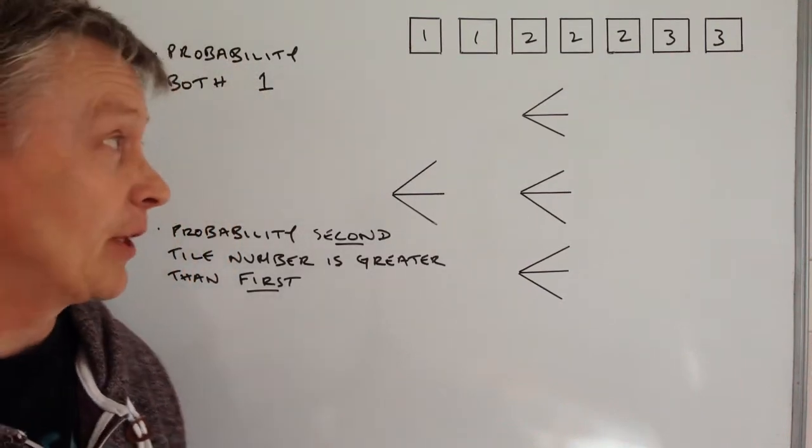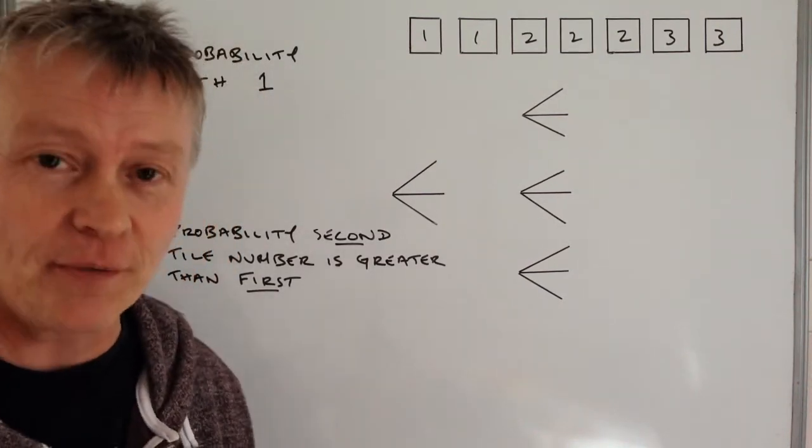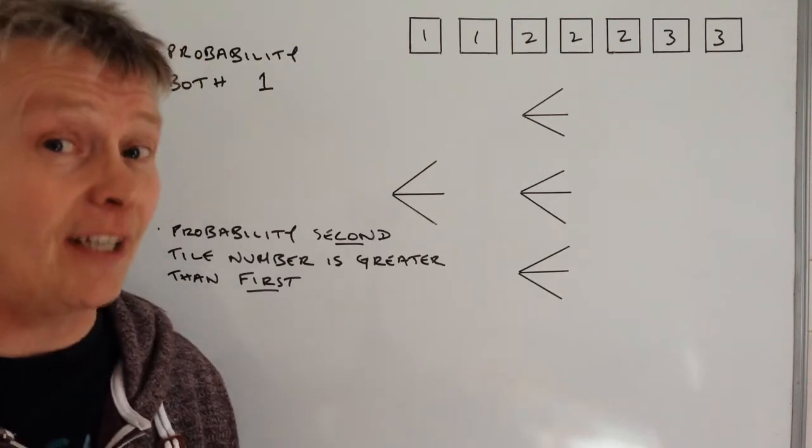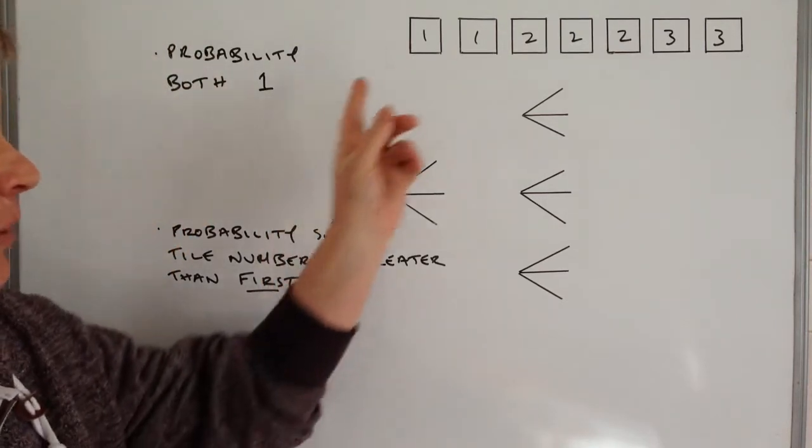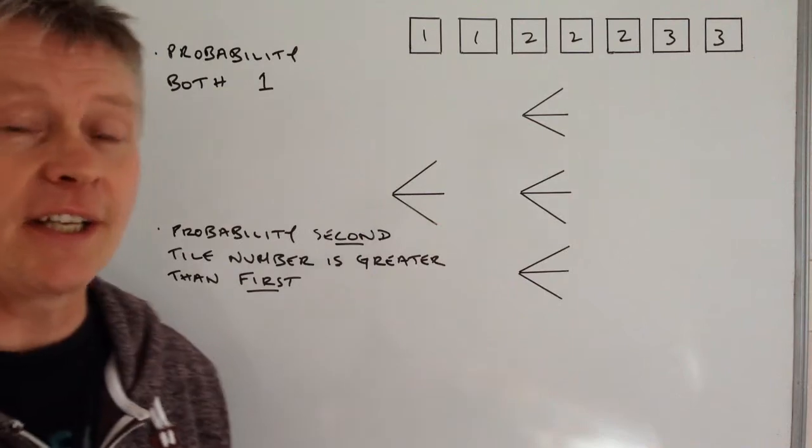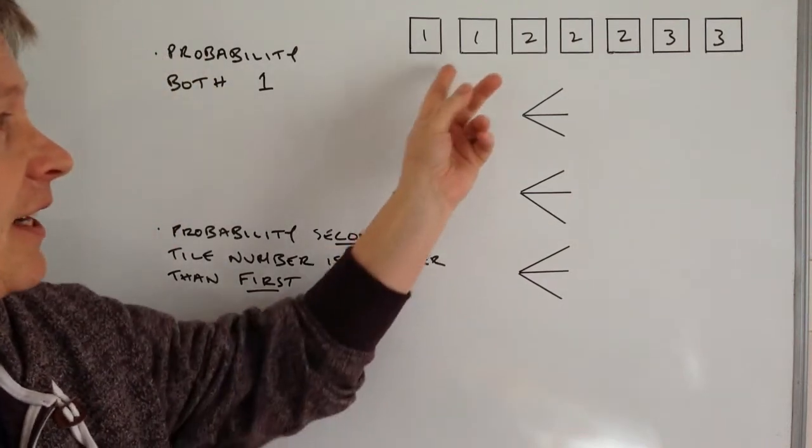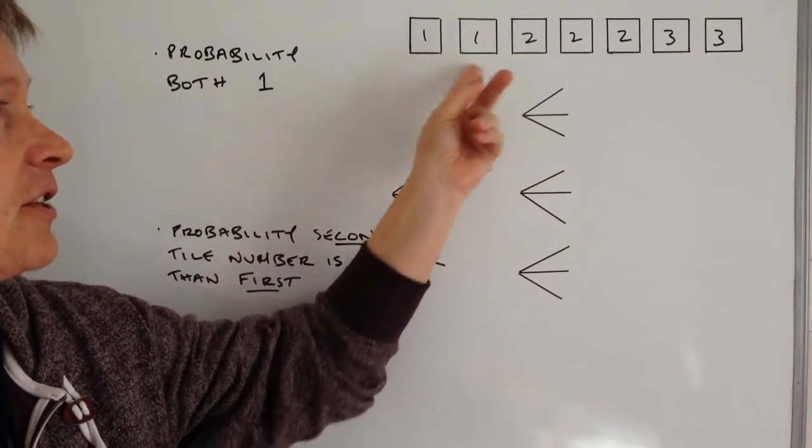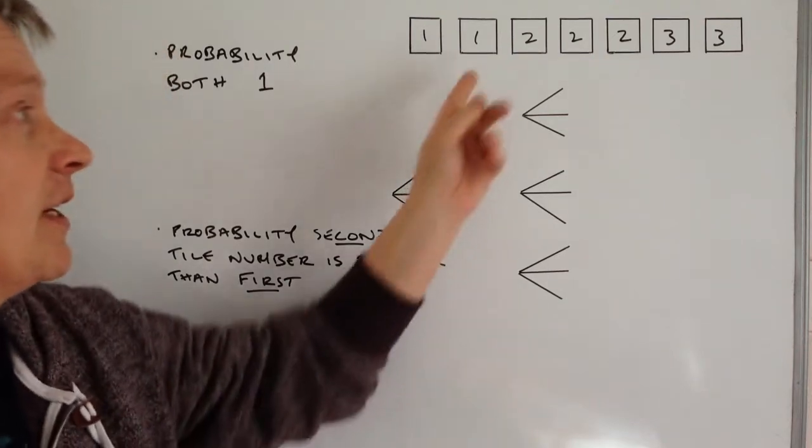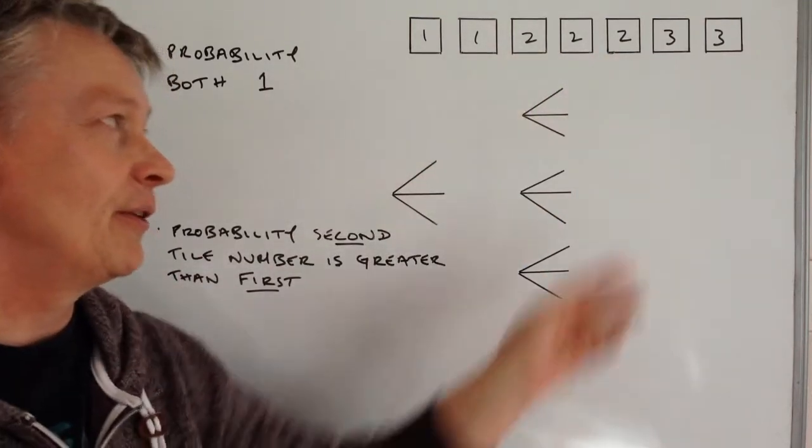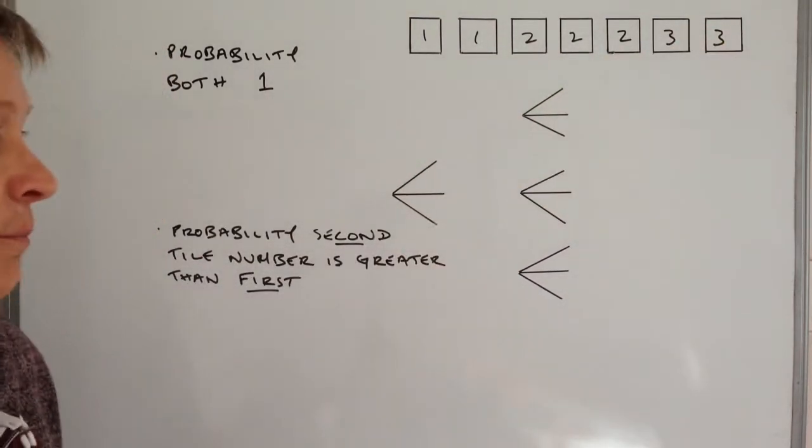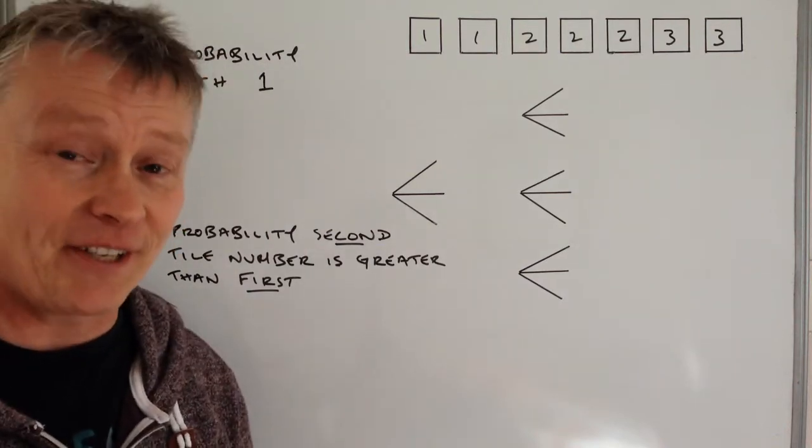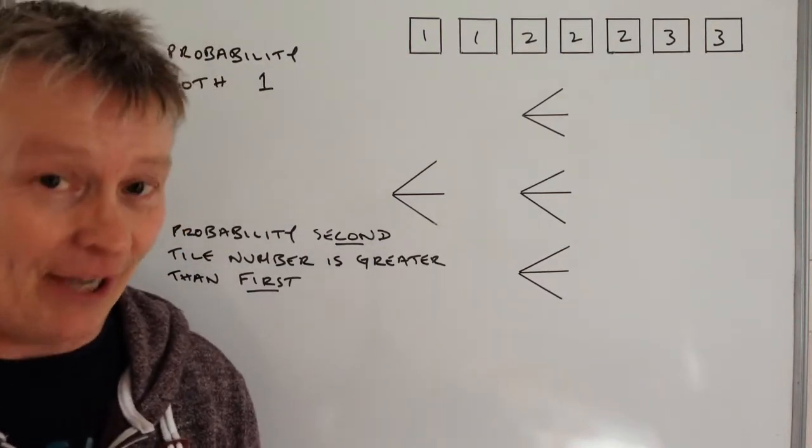Hi, in this particular video we're going to be looking at probability trees, but it's actually being given to you in a slightly different way. Basically what they're saying is this particular student has seven tiles: he's got two tiles with the number one on them, three tiles with the number two on them, and two tiles with the number three on them. He's put these tiles into a bag and then he's going to draw them out at random.